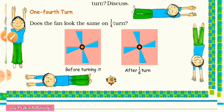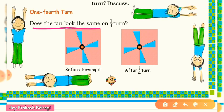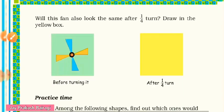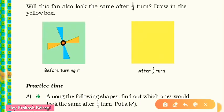Now let's read and solve some problems from the textbook. Does the fan look the same on one fourth turn? Here we have the blades of a fan — all blades are colored blue. What will happen on a one fourth right turn? The upper blade comes here — it is also blue — so there is no change. A one fourth turn shows no change in this shape.